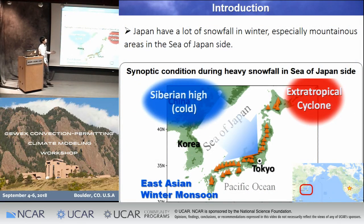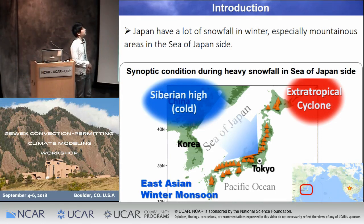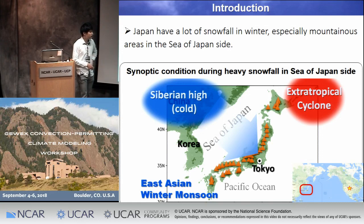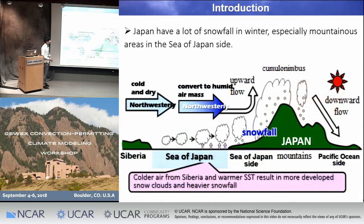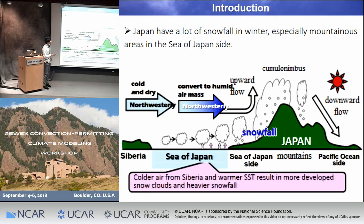Japan has a lot of snowfall in winter, especially in this mountainous area on the Sea of Japan side. In winter, the Siberian high develops over the continent, and sometimes the extratropical cyclone develops east of Japan. In this situation, the northwesterly, called the East Asian winter monsoon, prevails over Japan. This northwesterly is very cold and dry because it comes from Siberia, but it obtains a lot of moisture from the warm Sea of Japan and converts to a humid air, reaching the Japanese high mountains where there is a lot of snowfall.